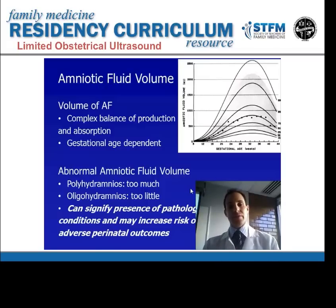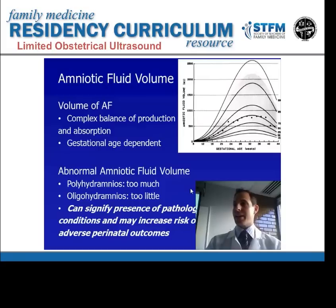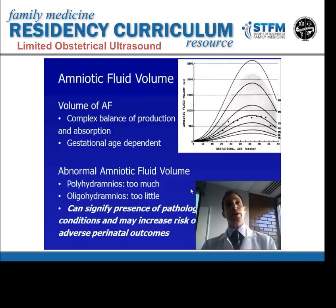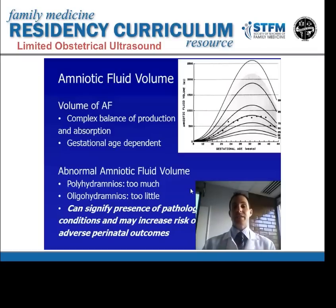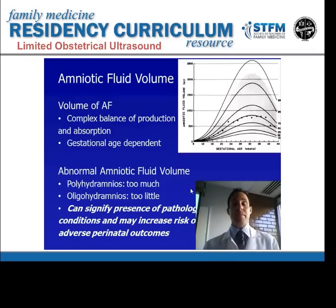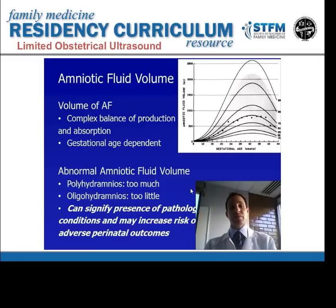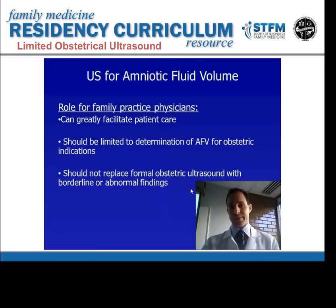What is considered normal and abnormal may depend on gestational age. Abnormal amniotic fluid volume has specific terminology: polyhydramnios means having too much fluid, and oligohydramnios means having not enough fluid. These conditions can signify the presence of pathologic conditions that may increase a pregnant mother and her fetus's risk for adverse perinatal outcomes.